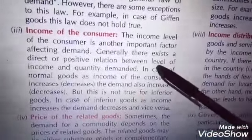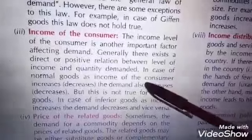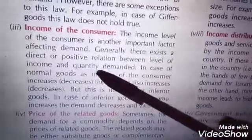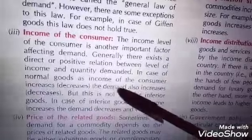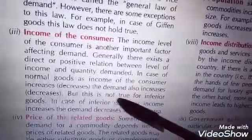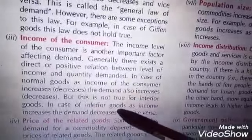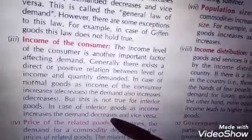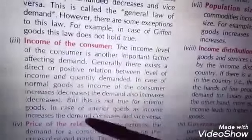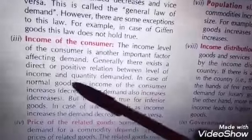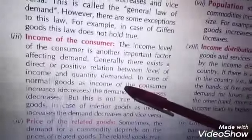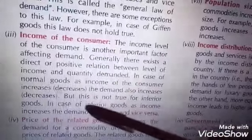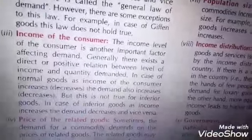Third determinant is the income of the consumer. The income level is a very important factor. Generally, there exists a direct or positive relationship between the level of income and the quantity demanded. In the case of normal goods, as the income of the consumer increases, the demand also increases. But this is not true for inferior goods — as income increases, the demand for inferior goods decreases and vice versa.